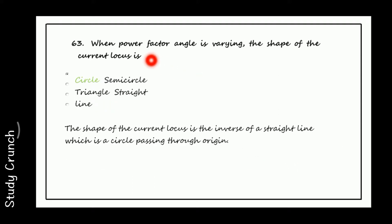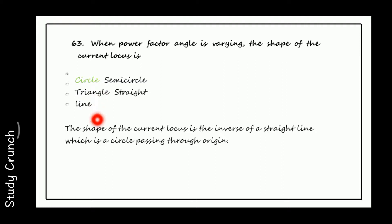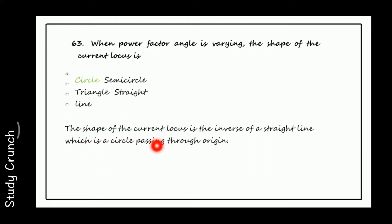When the power factor angle is varying, the shape of the current locus is a circle. The shape of the current locus is the inverse of a straight line, which is a circle passing through the origin.